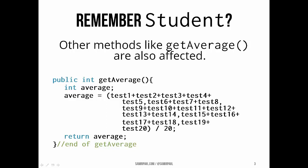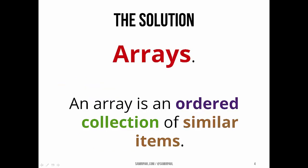Fortunately, because we have arrays, we end up having a way to handle this situation a bit more gracefully than just having separate variables for each individual value we want to work with. An array is an ordered collection of similar items, and it's a way for us to group together similar items into a single entity that we can refer to with a single name.